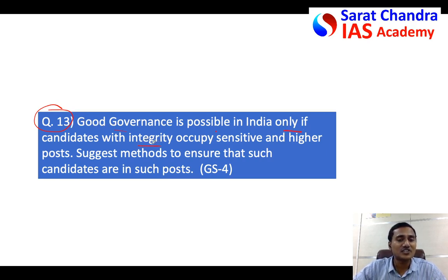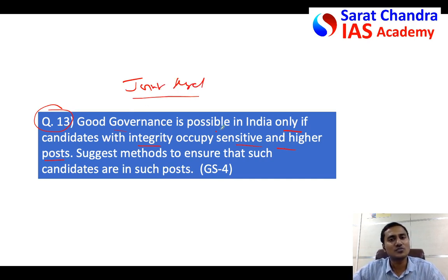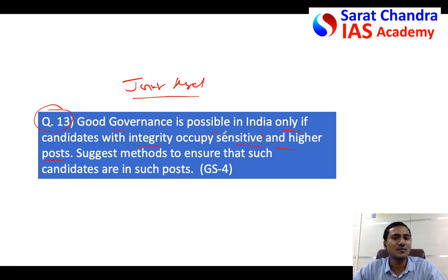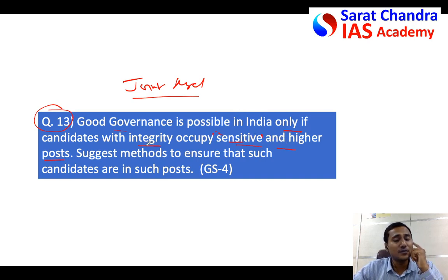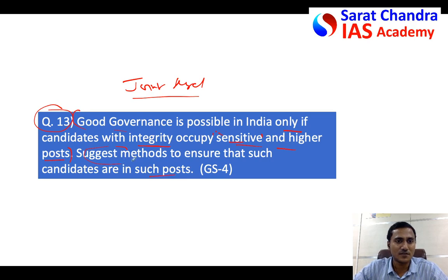Coming to the next question — Question 13: good governance is possible only if people with integrity are selected for sensitive and higher posts in the government. Posts above the joint secretary level are generally called higher posts. Sensitive posts are those involving a huge amount of money or where public or financial stakes are very high. So for those kinds of posts, people of integrity shall be selected — that is the statement. You have to explain the statement and then suggest methods to ensure this.